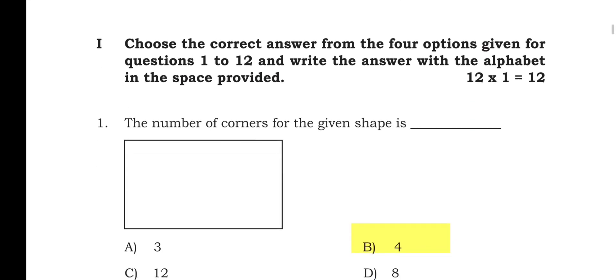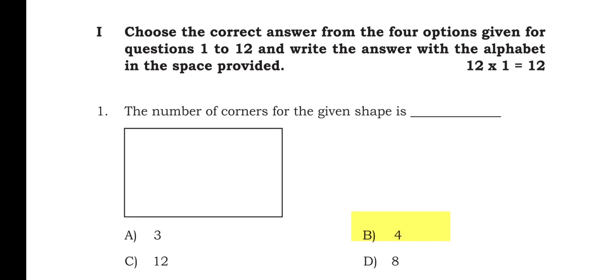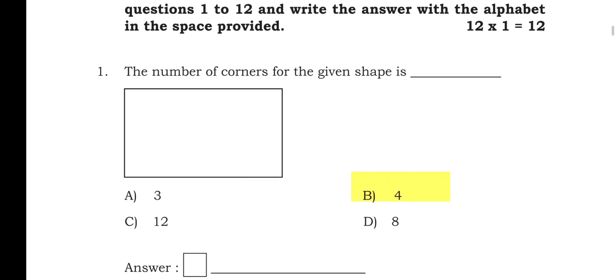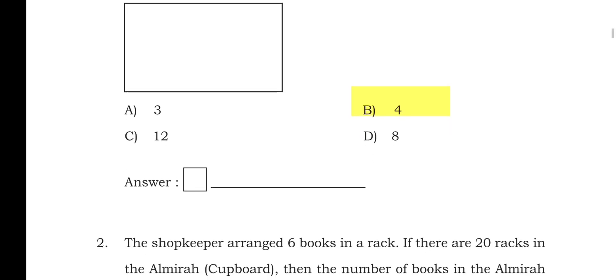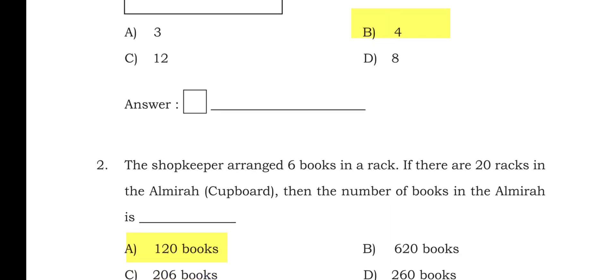The first section: choose the correct answer from the four options given for questions 1 to 12 and write the answer with the alphabet in the space provided. Question 1: the number of corners for the given shape — three corners, four corners, twelve corners, or eight corners. The right option is B, four corners. This is a rectangle; it has four corners. Write B in the given box and write 'four' in the dash.